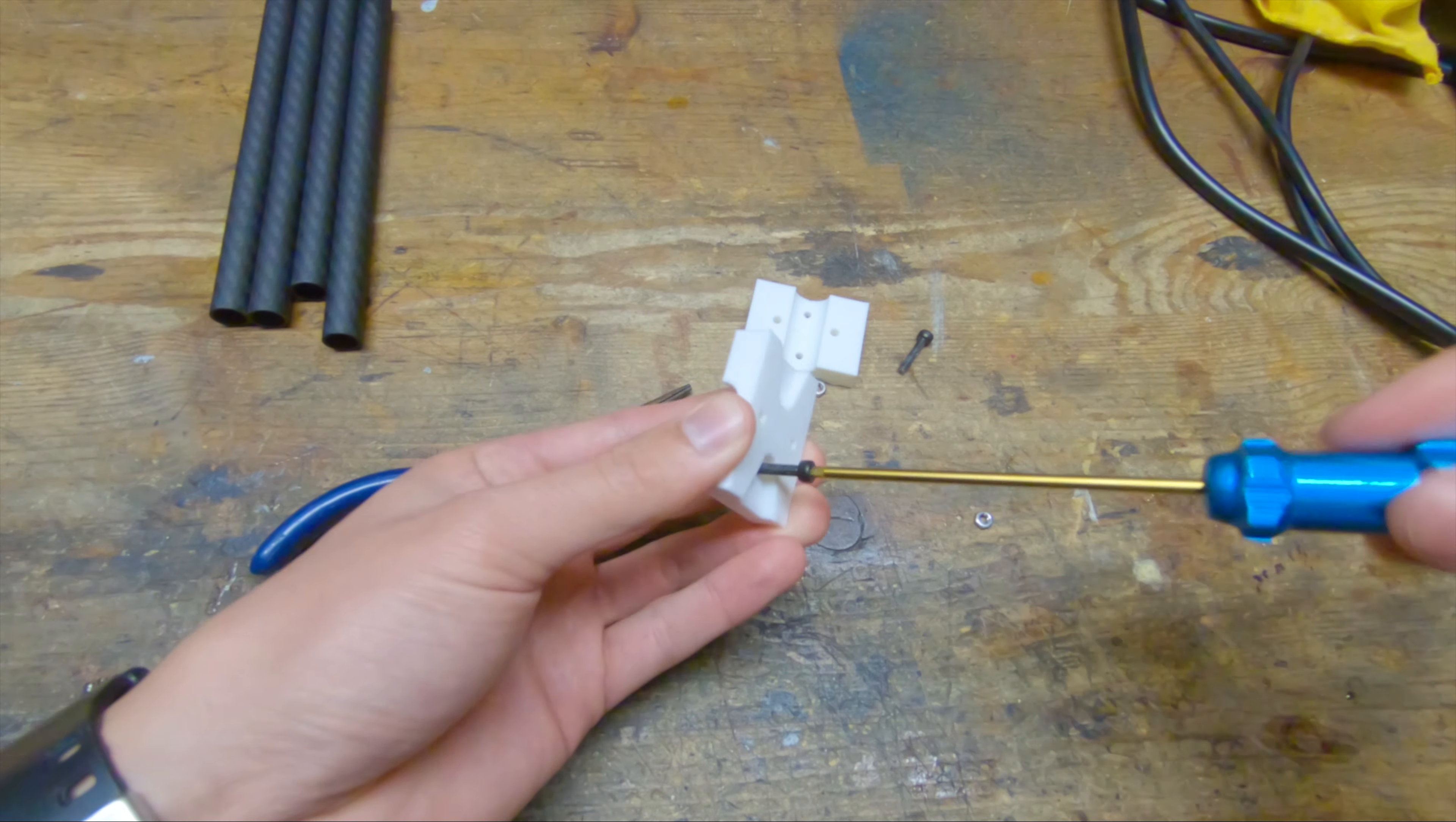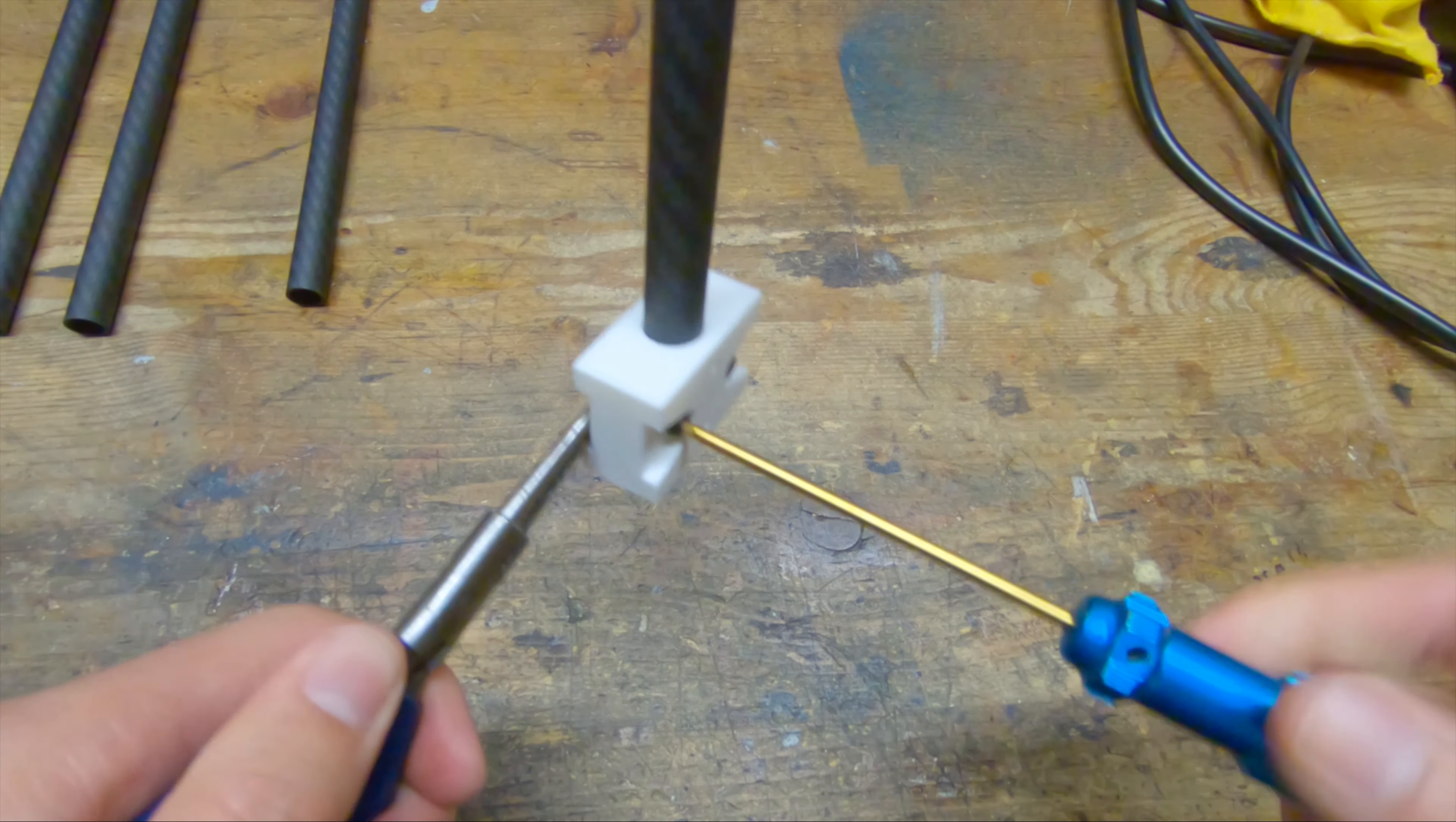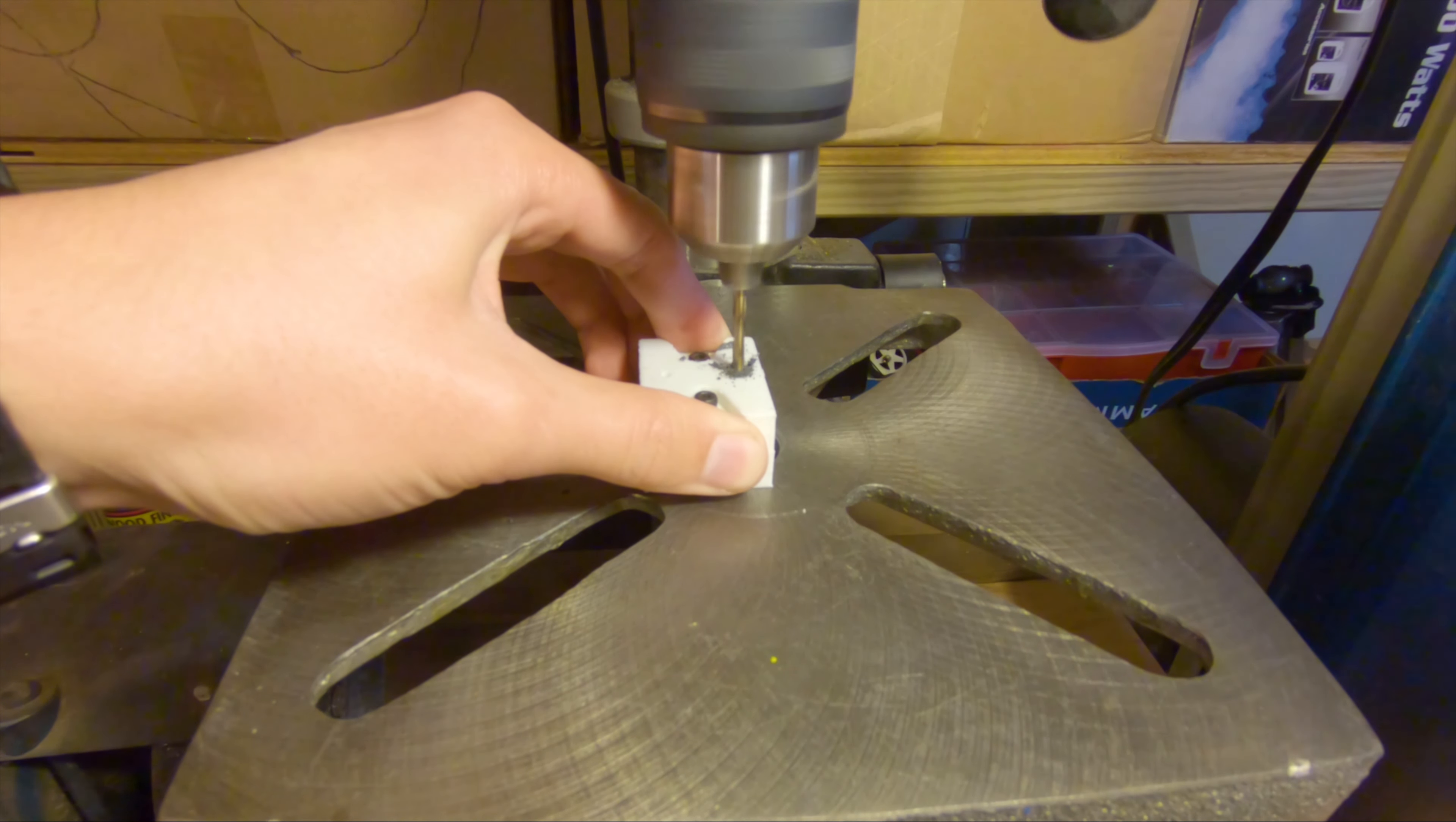Now I'm putting together this 3D printed jig. This slides onto the end of the arms so that you can get the hole locations for the arms exactly correct, because it's otherwise very hard to drill onto the round tubes.